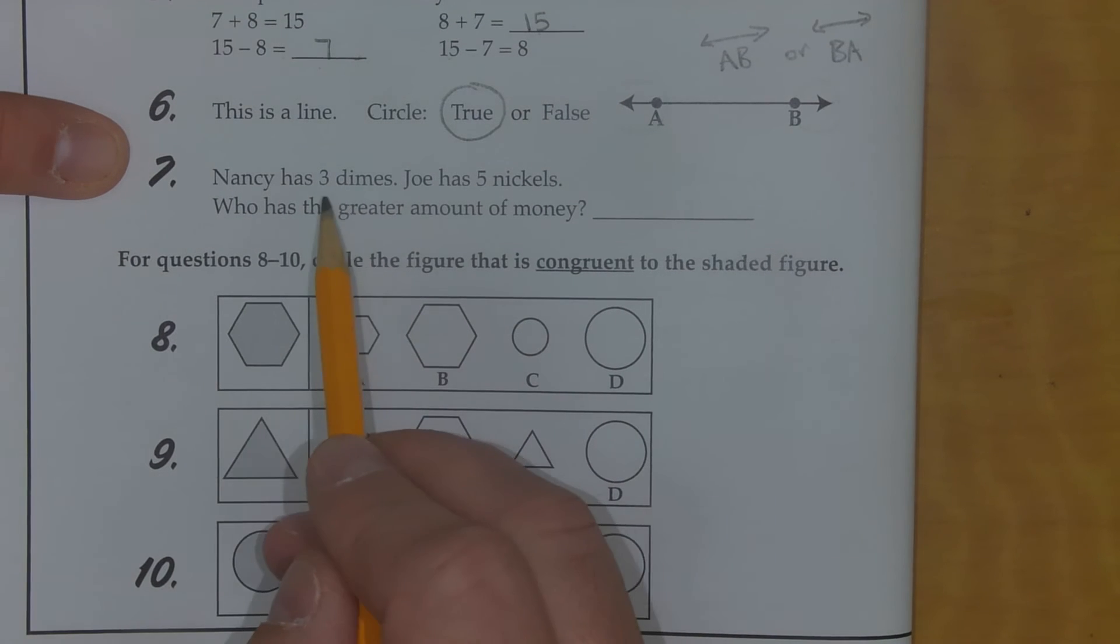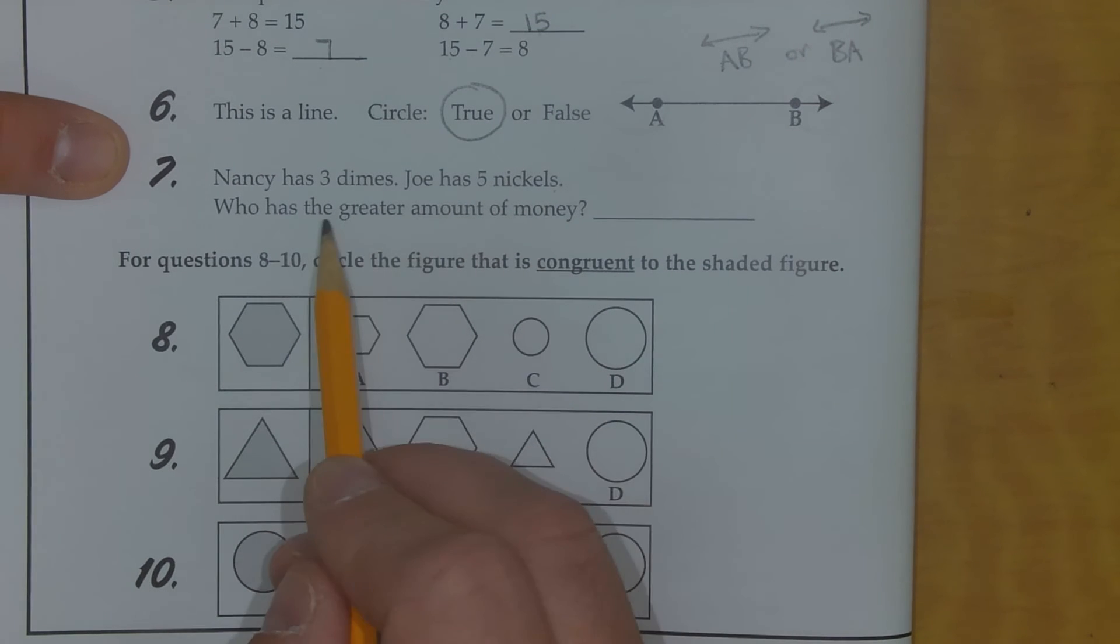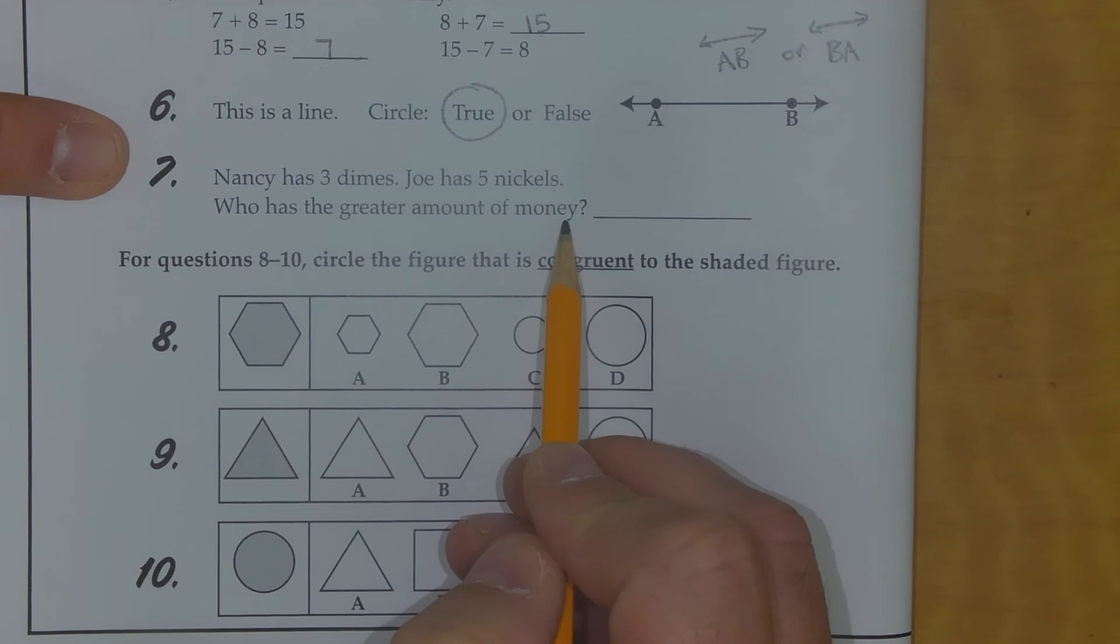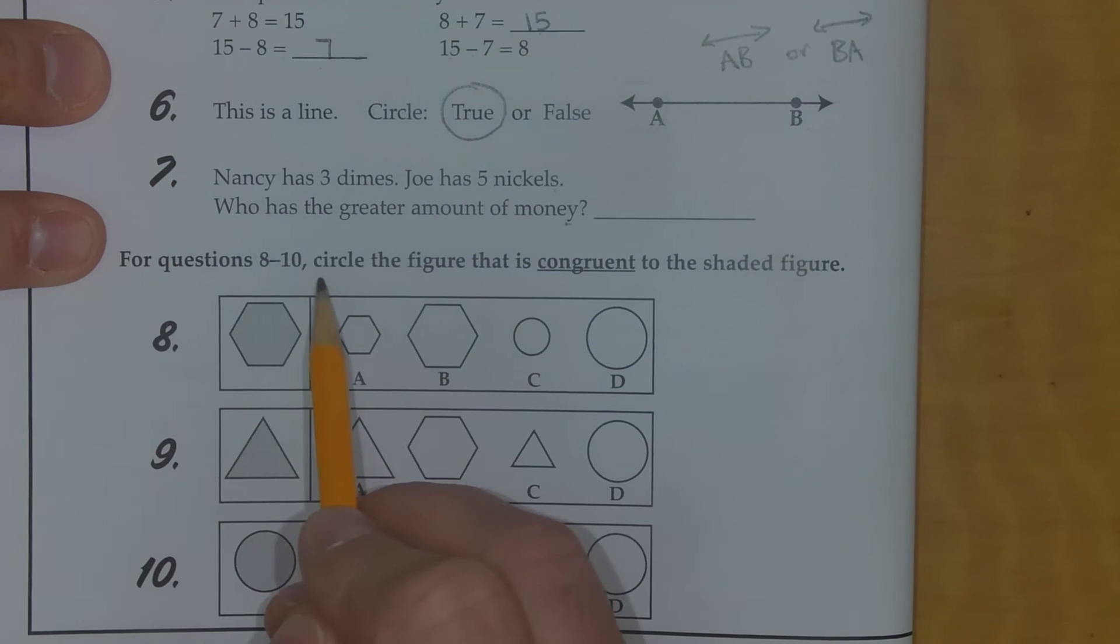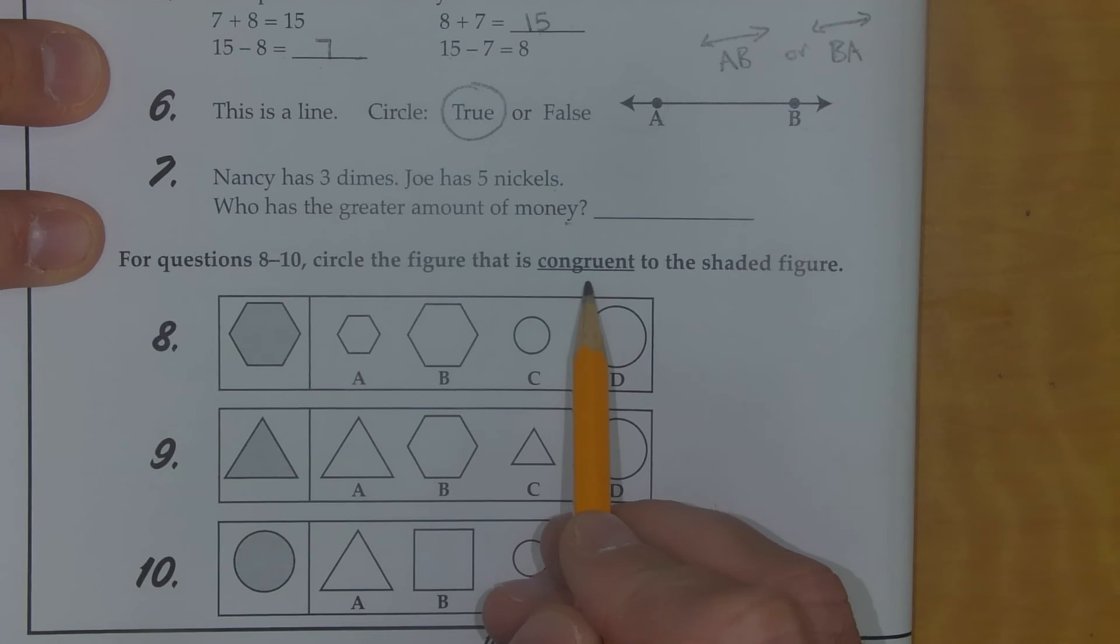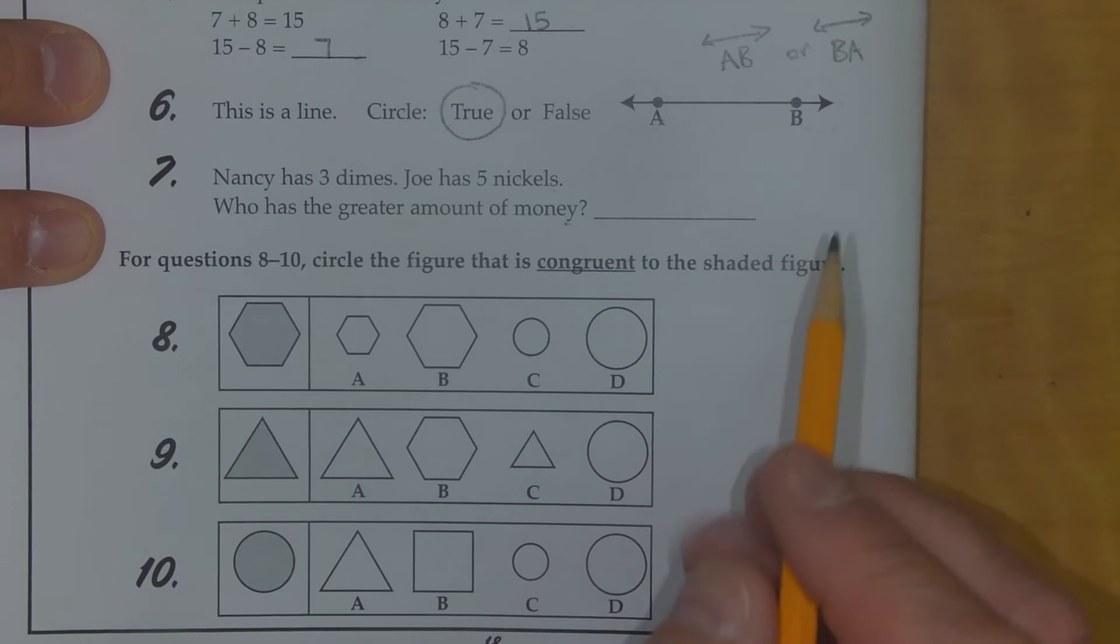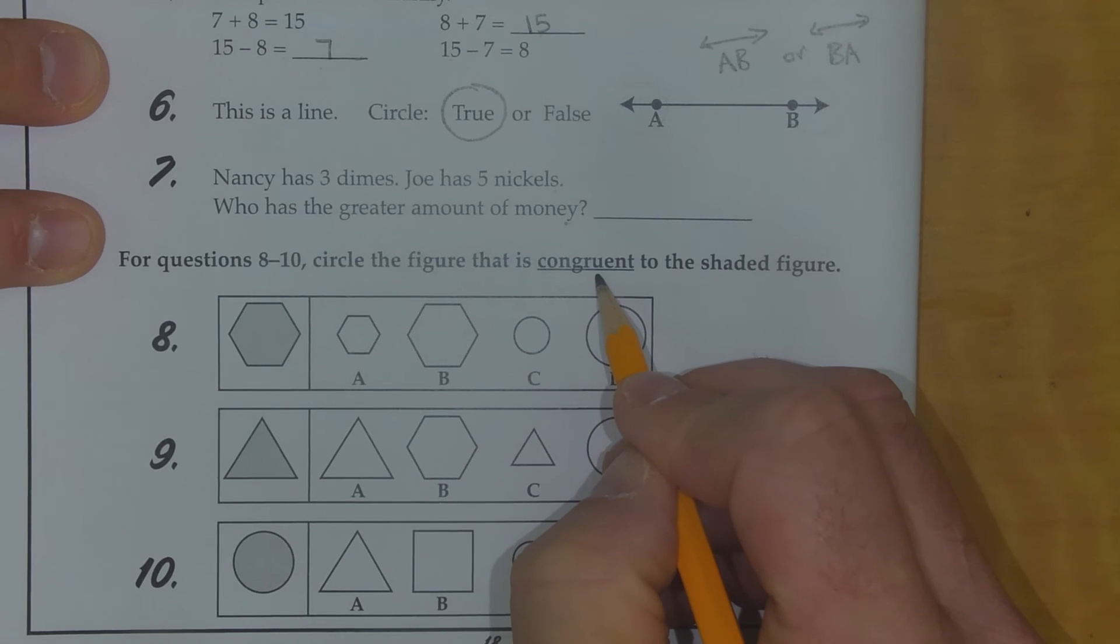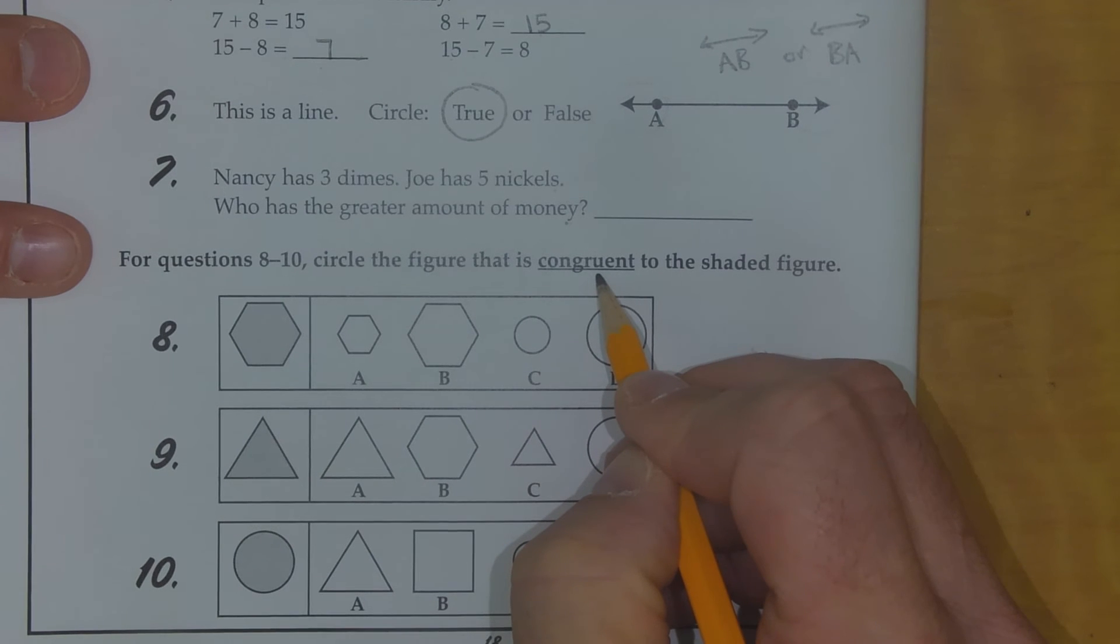Number 7: Nancy has 3 dimes, Joe has 5 nickels. Who has the greater amount of money? And for questions 8 through 10, circle the figure that is congruent to the shaded figure. And just remember, congruent means same size, same shape.